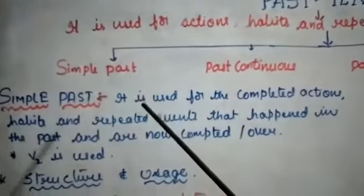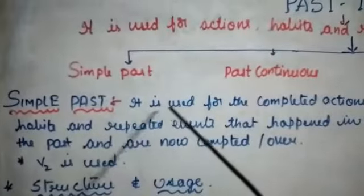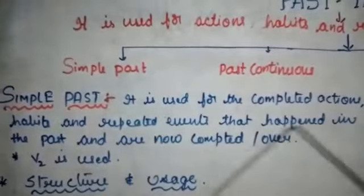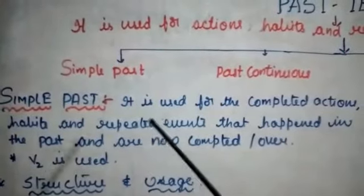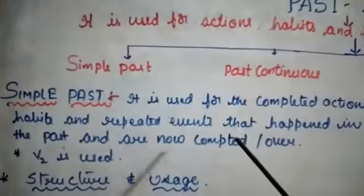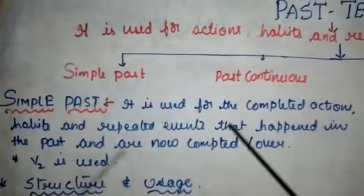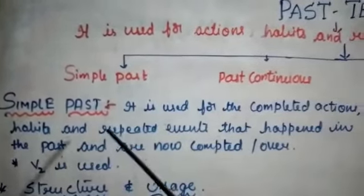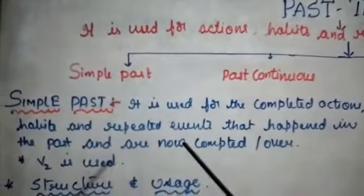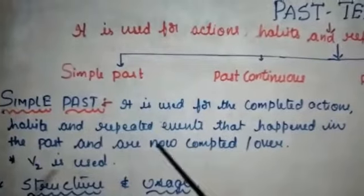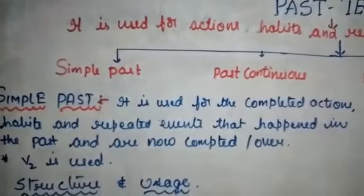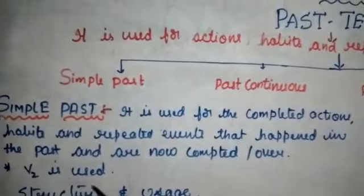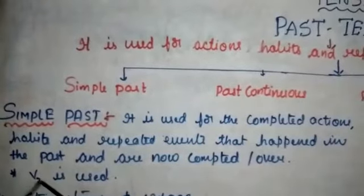Now we will see what is simple past and when it is used. Simple past is used for completed actions, habits, and repeated events that happened in the past and are now completed or over — they will not be continued further. Those are called simple past sentences. For simple past, we have to use V2 form — verb second form.